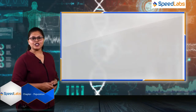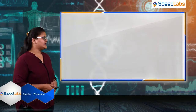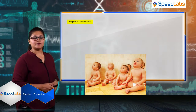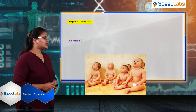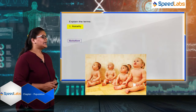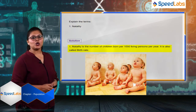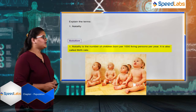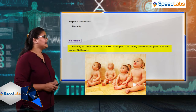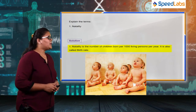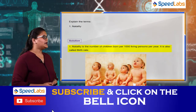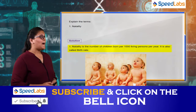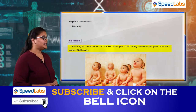The next type of question we have is: explain the following terms. The first term is natality. Natality is also called the birth rate. It is the number of children born per thousand living persons per year.